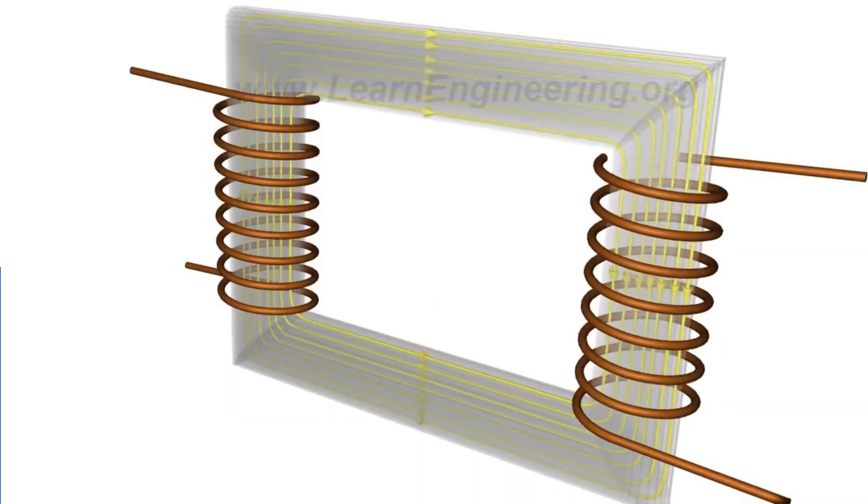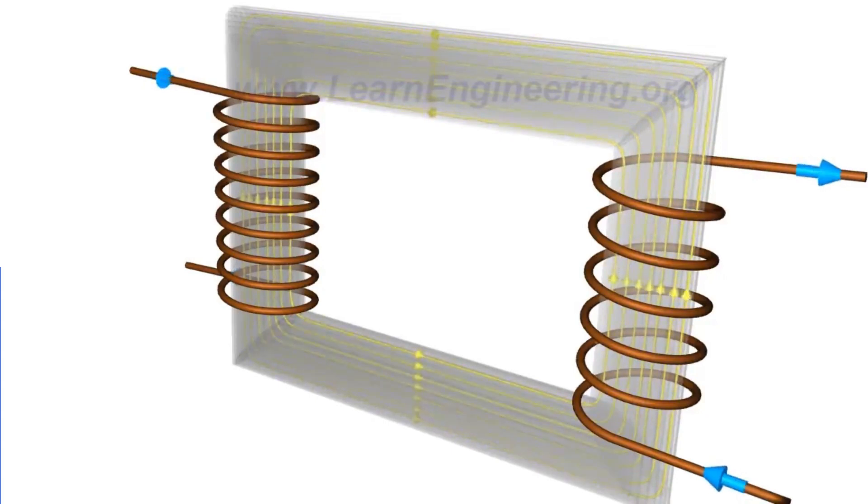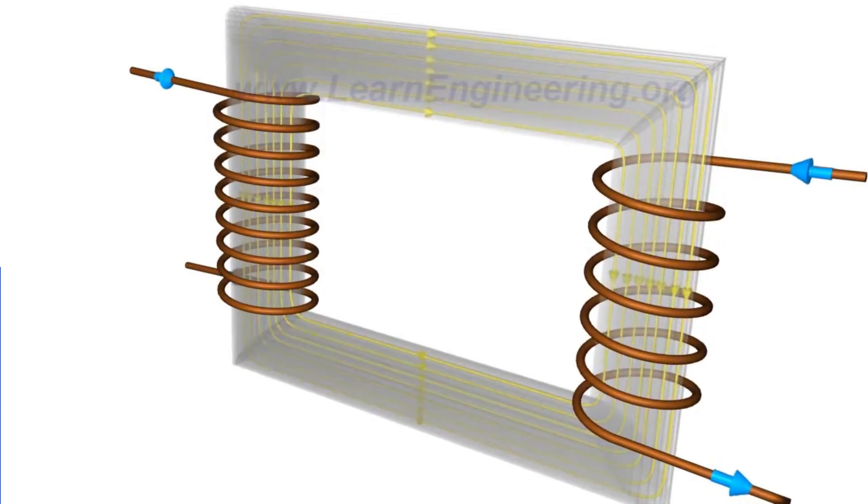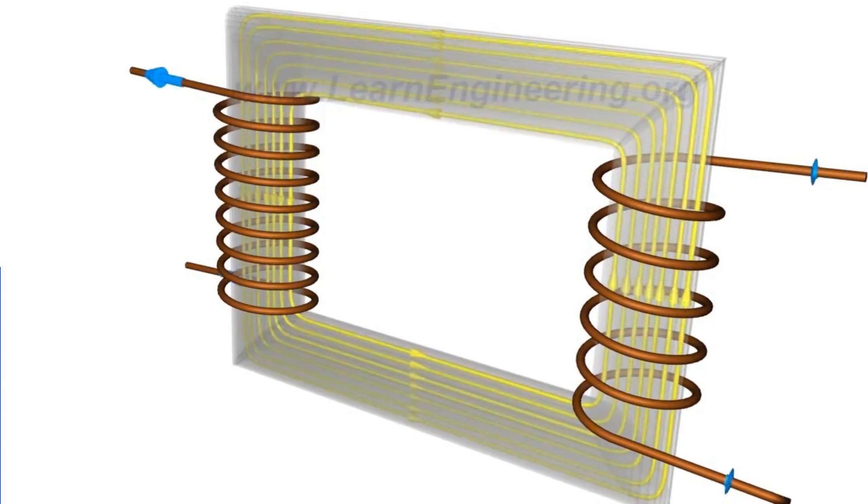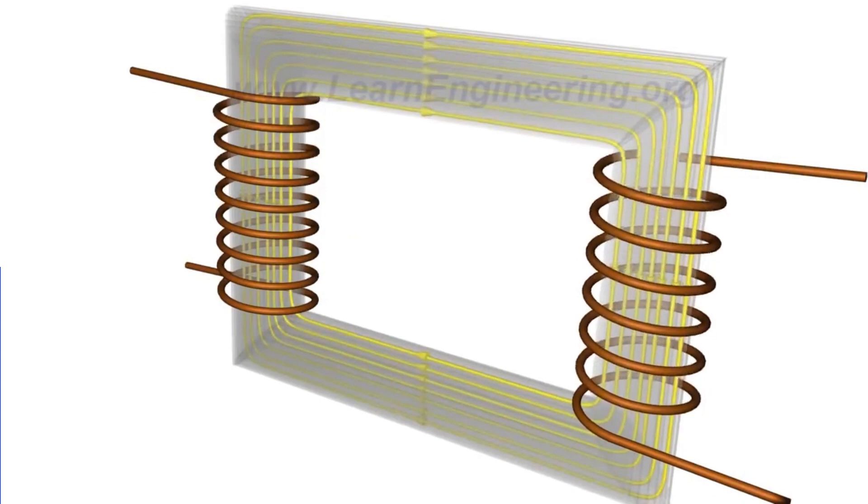Step-down transformers: Conversely, in a step-down transformer, the secondary coil has fewer turns than the primary coil, resulting in a reduced output voltage compared to the input voltage. The fewer turns in the secondary coil cause a lower induced voltage, leading to a step-down in voltage.